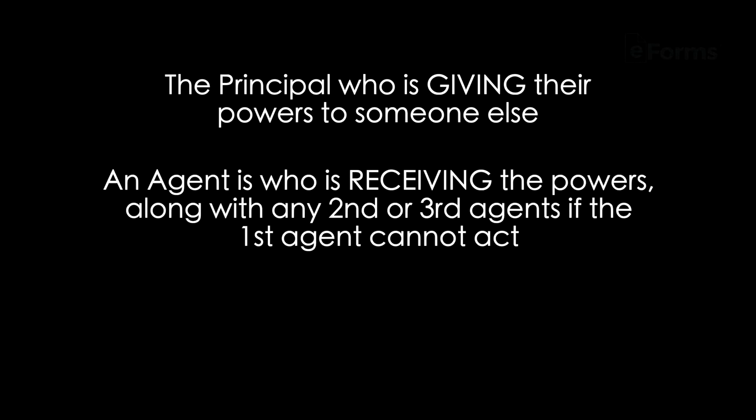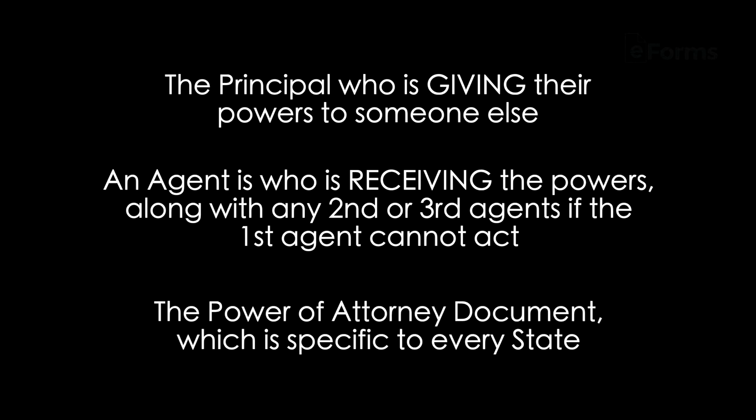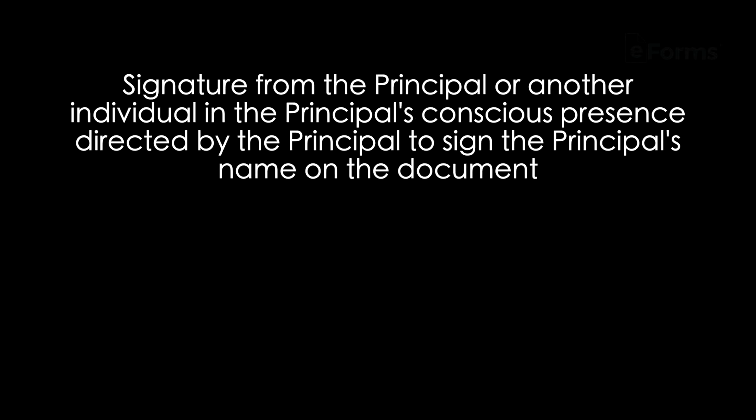How to get power of attorney. To get power of attorney in Ohio, you will need the following: the principal, who is giving their powers to someone else; an agent, who is receiving the powers, along with any second or third agents if the first agent cannot act; the power of attorney document, which is specific to every state; and a signature from the principal, or another individual in the principal's conscious presence directed by the principal to sign the principal's name on the document.